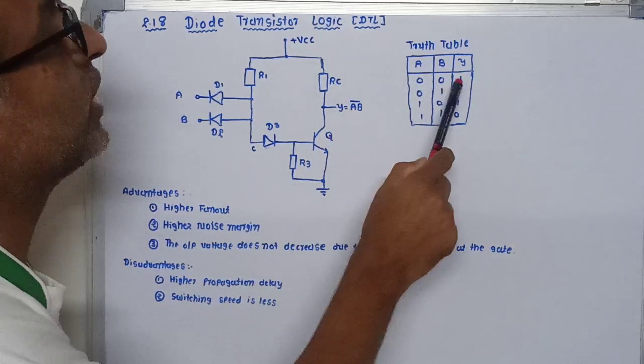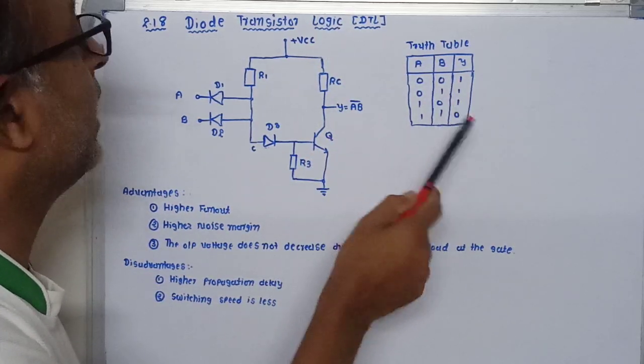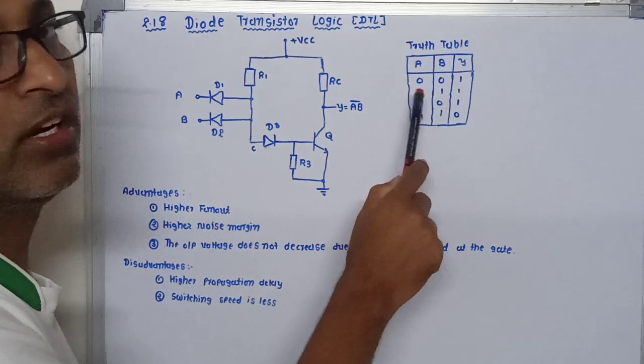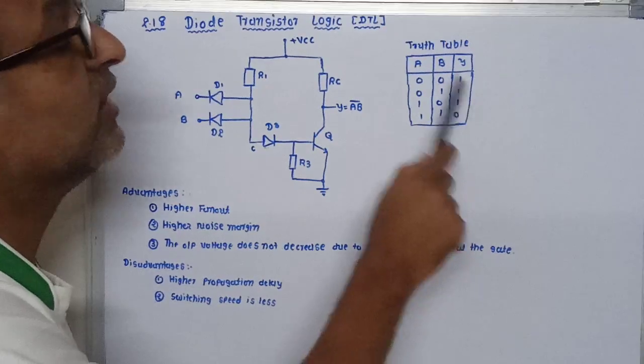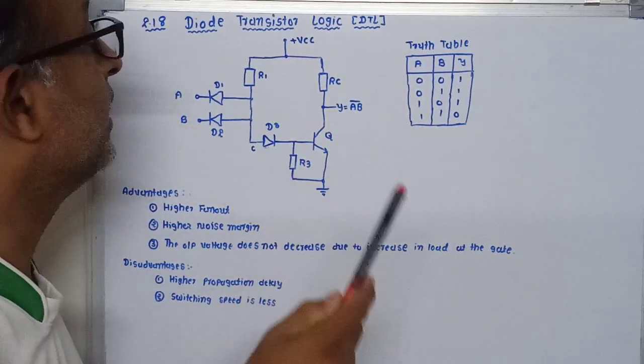When we give zero input to both inputs, we get output as logic 1. Or when either input becomes 1, the output still remains at logic 1 or higher level.